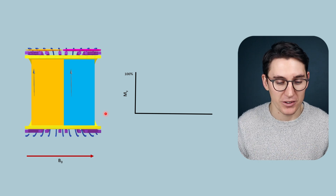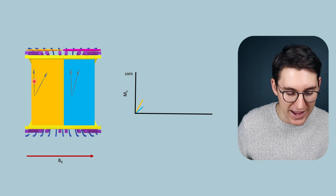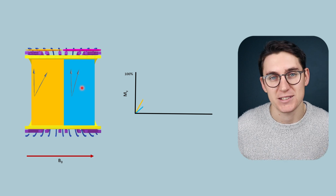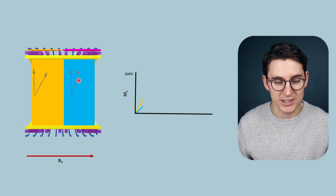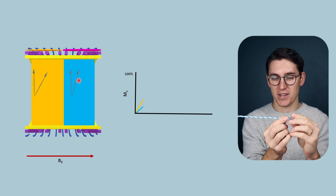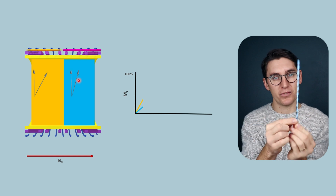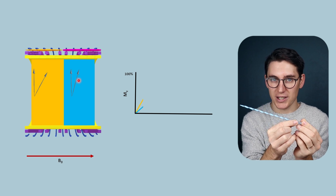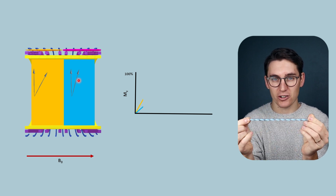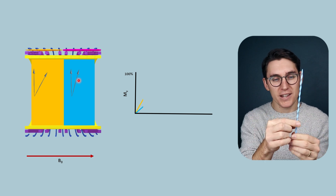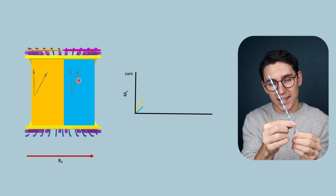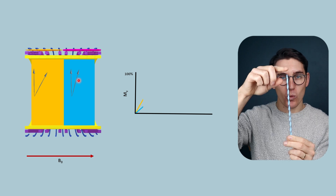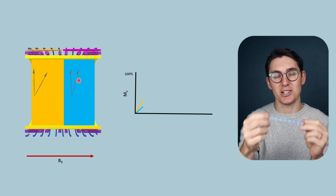Let's see what happens over a period of time. We wait, and we see that fat has regained some longitudinal magnetization, and the same is happening in CSF, though more slowly. As this process occurs — as we regain longitudinal magnetization — T2 relaxation is also happening simultaneously, where the spins within the CSF are de-phasing with one another.